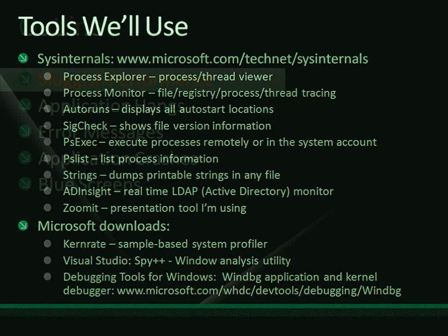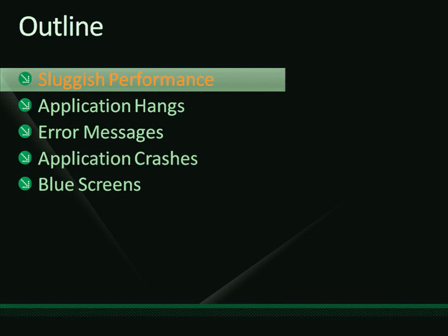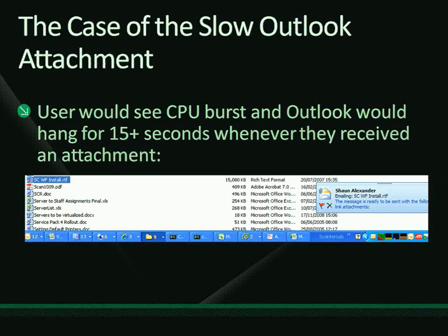Let's start with the first real-world case: sluggish performance. A user would see a CPU burst in their tray and Outlook would hang for 15 seconds whenever they received an email with an attachment. This person actually had reasonable Outlook performance otherwise, so this was unusual. The question was: why does this happen only when receiving an attachment?